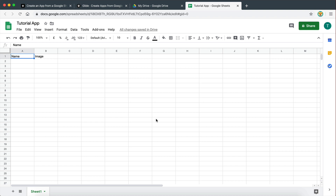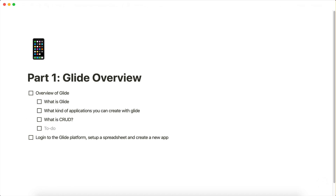What this means is that we can actually create any kind of CRUD application. CRUD stands for create, read, update, and delete — these are the four basic functions that our apps are going to be able to perform. Our applications are going to be able to create data stored in the spreadsheet, read or retrieve data from the spreadsheet, update data in the spreadsheet, and delete data from the spreadsheet. You can think of all the different applications you can create using only these four functions — most applications you use every single day are CRUD applications. So the possibilities are literally endless.